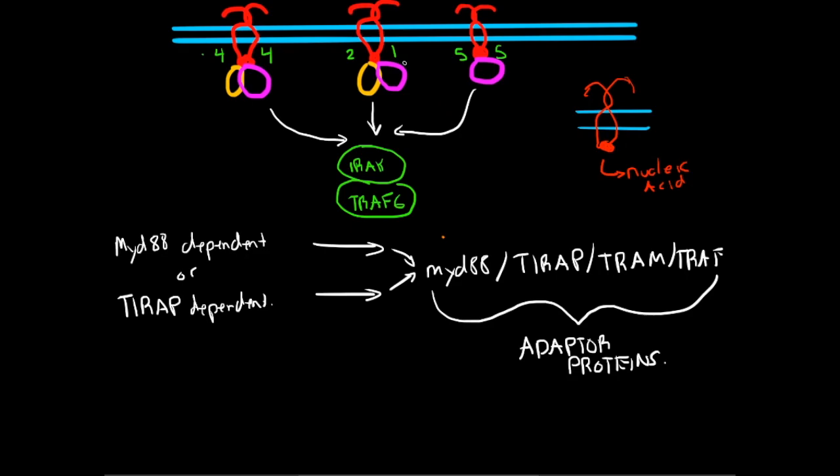So signaling through toll-like receptors is very complicated. It's really hard to get a grasp on it, so I'm going to try the best I can to simplify this as much as possible. Here we have what are called the adapter proteins. So this yellow one, we're going to call this one TRAP, and this purple one is MYD88.